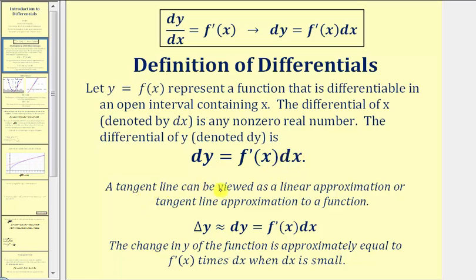Because the tangent line can be viewed as a linear approximation to a function, we can use differentials to approximate function values. We can say delta y, the change of y of a function, is approximately equal to differential y — the change of y along the tangent line — which equals f prime of x times dx. This approximation holds in most cases as long as differential x is small.